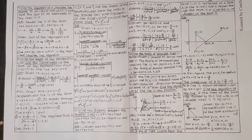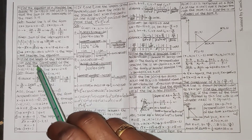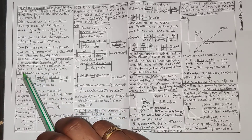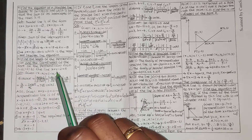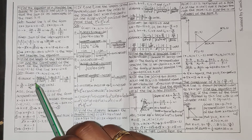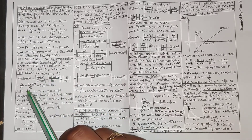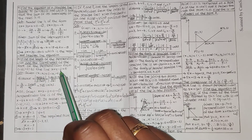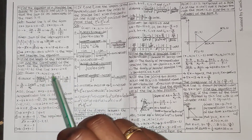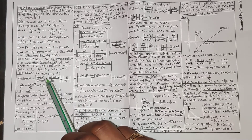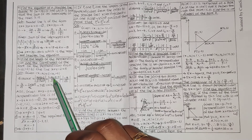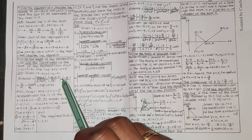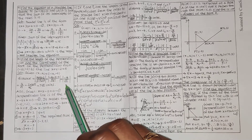Next, question number 10: find the length of the perpendicular and the coordinates of the foot of the perpendicular from the point minus 10 comma minus 2 to the line x plus y minus 2 equals 0. Using the distance formula with x1 equals minus 10, y1 equals minus 2: the distance is the modulus of x1 plus y1 minus 2 over the square root of 1 squared plus 1 squared, which equals modulus of minus 10 minus 2 minus 2 over root 2, giving minus 14 over root 2.